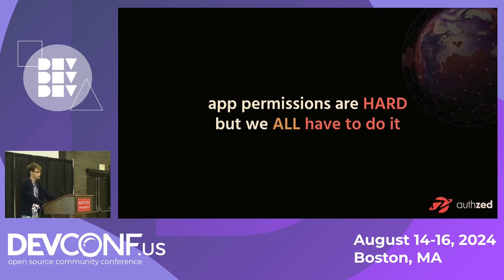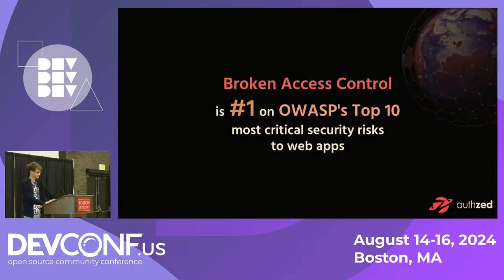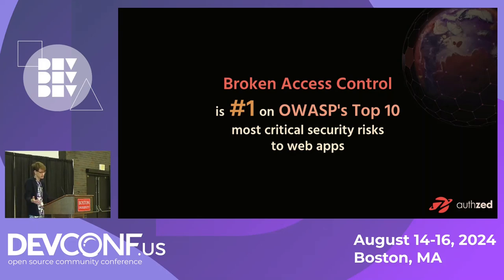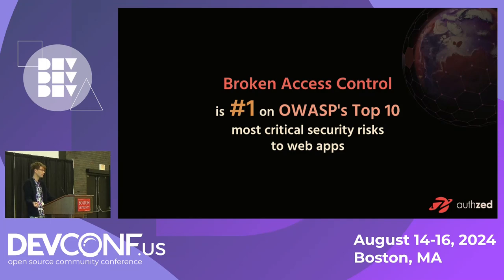Let's do a quick check-in on how good of a job developers are doing. If you're familiar with OWASP, they're a nonprofit that evaluates security practices for web applications every few years, and they have a top ten list. In 2017, broken authorization was number five. By 2021, it's become number one — ahead of supply chain security, which you hear a lot of buzzwords about.